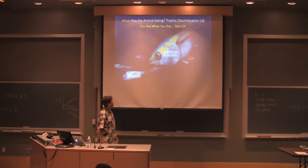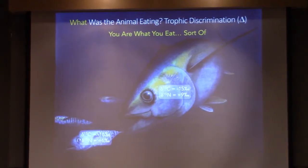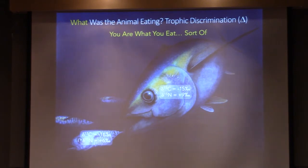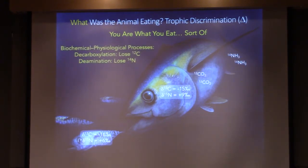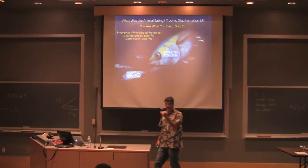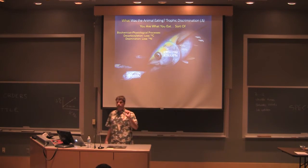Like I said, you are what you eat, sort of—there's an offset. So if you're talking about this tuna here and its prey, there's a difference between the tuna and both carbon and nitrogen isotopes. Let's say it's one per mil for carbon and three per mil for nitrogen. There's biological, or sorry, physical, biochemical, and physiological processes, and the two we're going to talk about today are decarboxylation and deamination. So as this tuna breathes, it's breathing out light CO2.